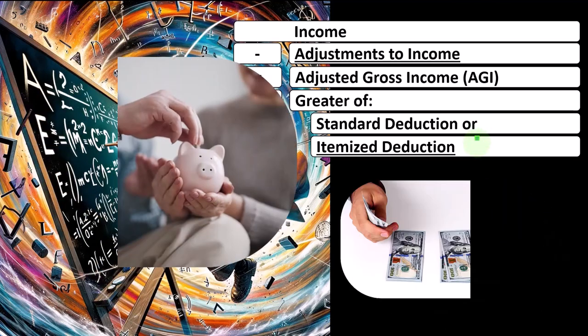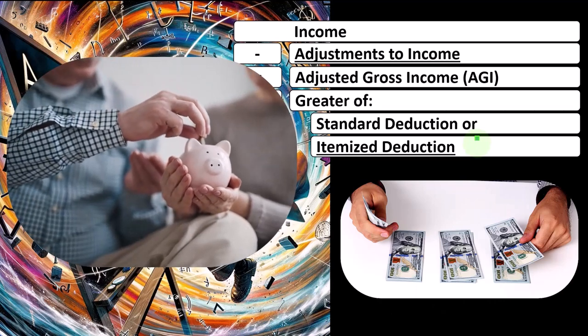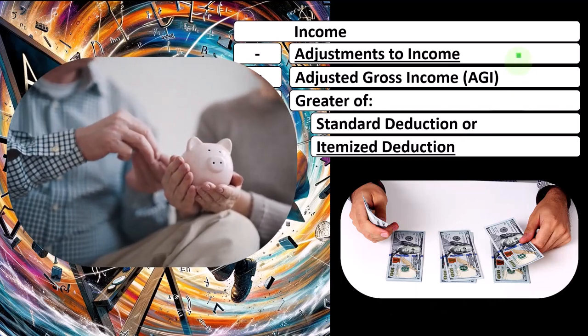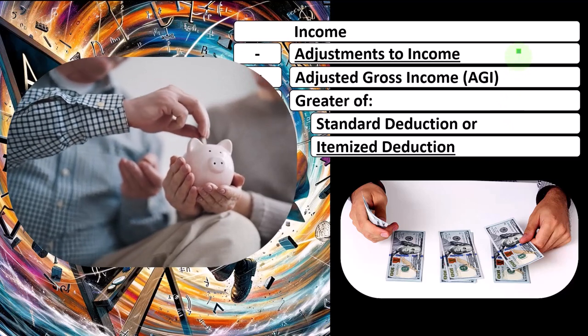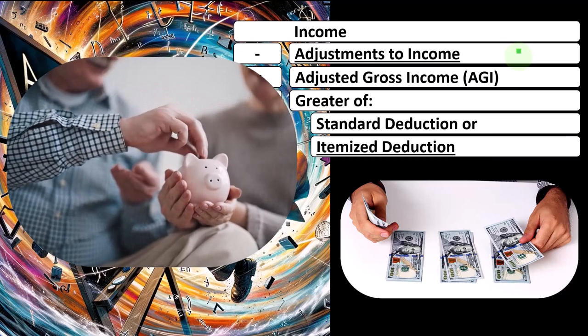If you get a deduction for retirement plans, and you don't have to include that money in income, or you get like an IRA above the line or adjustment to income deduction, then that's incentivizing people to save for retirement, which is good.